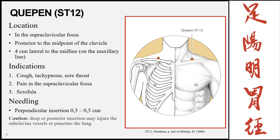The next point is Quepen, Stomach 12. This point is located in the supraclavicular fossa, posterior to the midpoint of the clavicle. To locate it, find the medial and lateral borders of the clavicle, divide the distance in half, and go superior so you're still within the supraclavicular fossa. The clavicle length is 8 cun, so the midpoint is 4 cun, making this point 4 cun lateral to the midline.